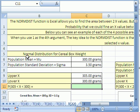Look at this. We have cereal box weight. And if the population data for cereal box weight is normally distributed, that means like a bell shape, then you can use this function to calculate the probability that some value lies between two other values.